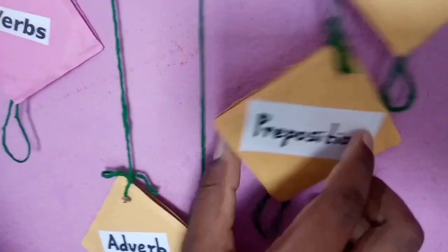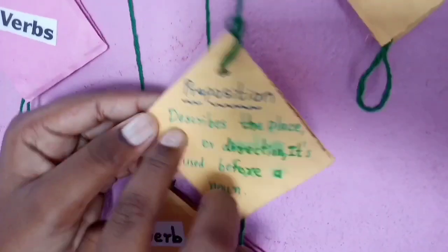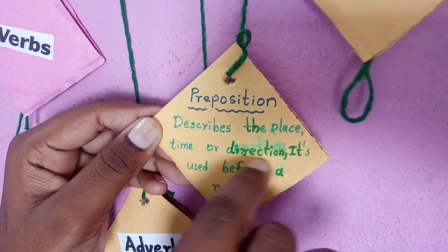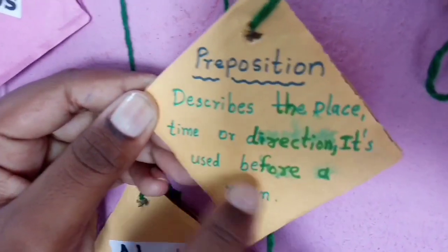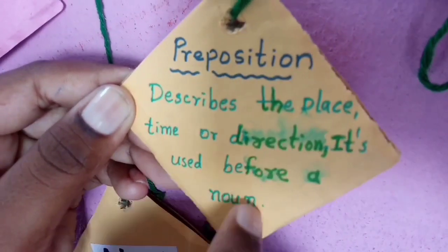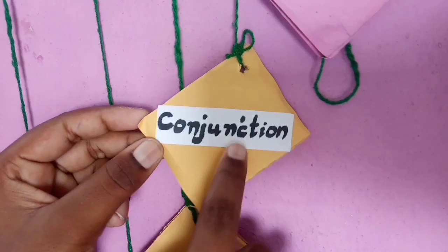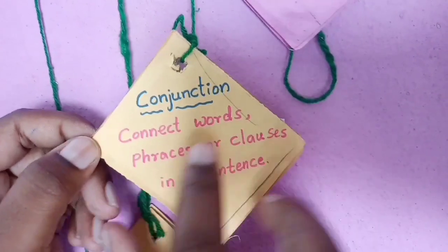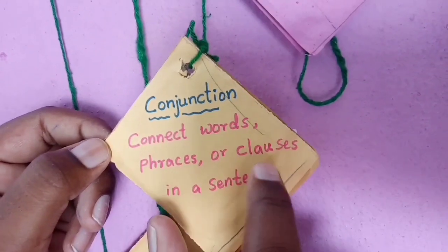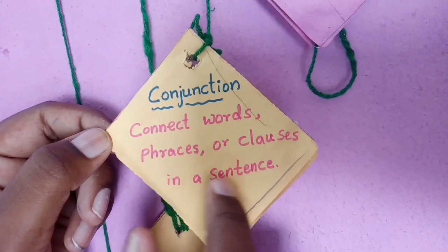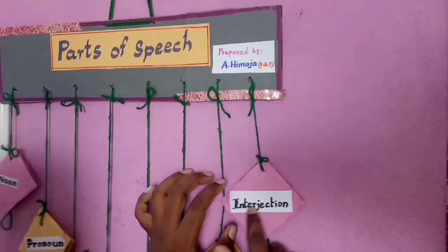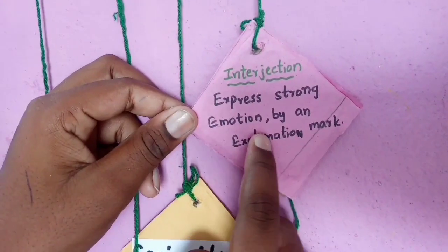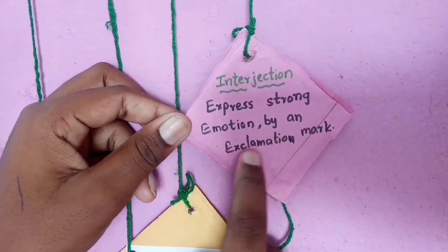Preposition: describes the place, time, or direction. It is used before a noun. Conjunction: connects words, phrases, or clauses in a sentence. Interjection: expresses strong emotion by an exclamation mark.